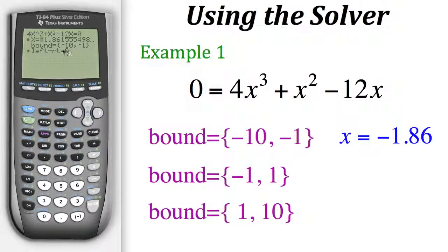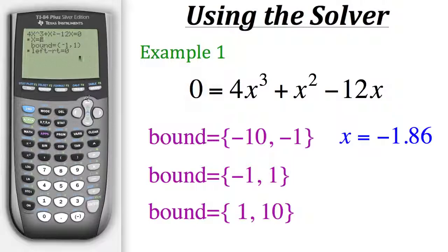You may notice that there's an extra row that shows up. All it does is tell us the difference between the left side of our equation and the right side of our equation, which in our case is zero. Now let's try finding our second solution within the bounds of negative 1 and 1. We'll go down to change our bounds to negative 1 and positive 1, then choose a number within that interval — let's say zero. We'll hit alpha, enter. In this case our guess was correct, because our solution did end up being x equals zero.